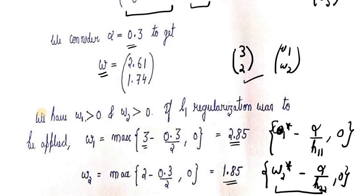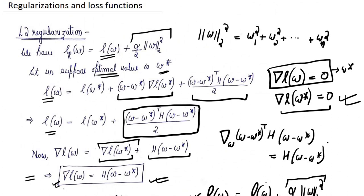In this video we considered both L1 and L2 regularization techniques and applied them to a small numerical example where the optimal value was already known, observing how both regularization methods change the weights to avoid overfitting. In future videos we will delve deeper into other regularization techniques like dropouts and batch normalization, and discuss more numerical examples in higher dimensions. Thanks for your time.